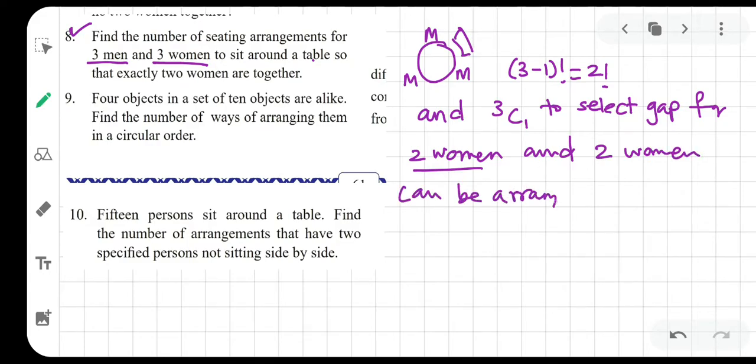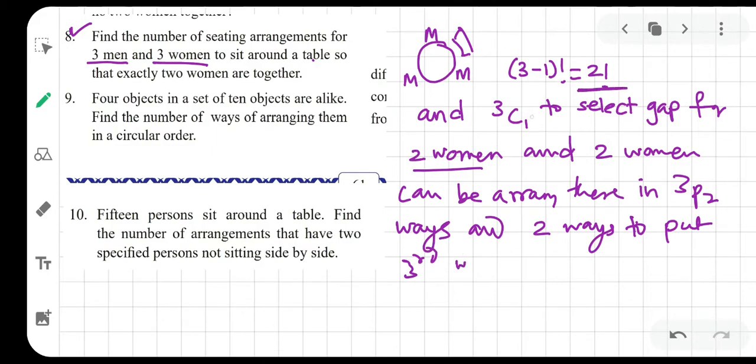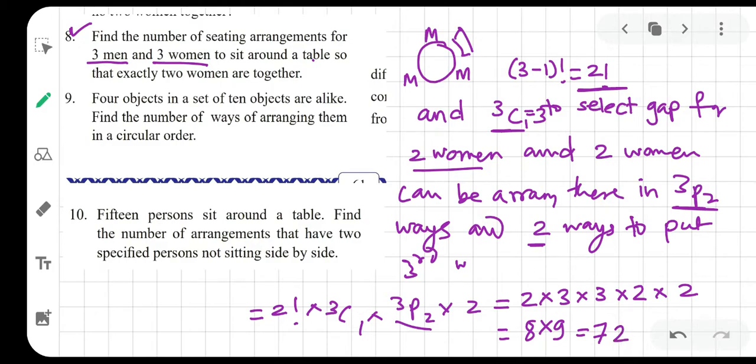So I'm saying that okay, two women can be arranged there in 3P2 ways. And the remaining spot from the two gaps can be selected in two ways. Two gaps remain to put the third woman there. So the total ways are 2 factorial, 3C1, which is 3, 3P2, and 2. So the answer is 2 factorial into 3C1 into 3P2 into 2, which is 2, 3, 3 into 2, and into 2.